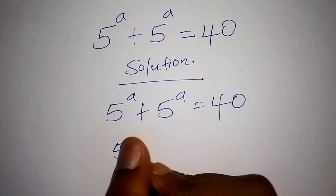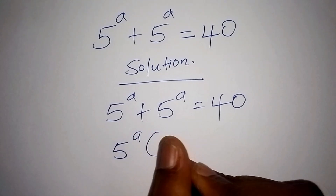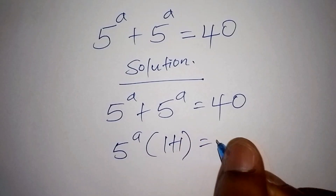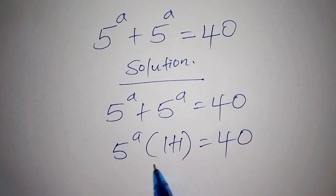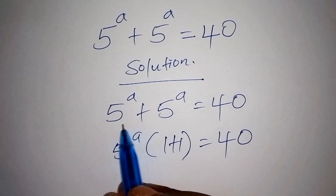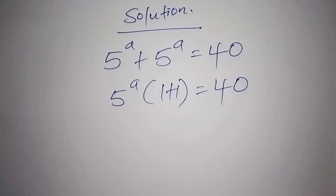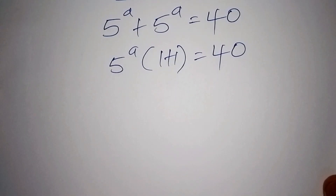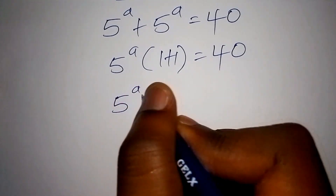The first thing we shall do is factorize, giving us 5 to the power of a times the bracket (1 plus 1) equals 40. When you expand what is inside the bracket, you arrive back at 5 to the power of a plus 5 to the power of a.